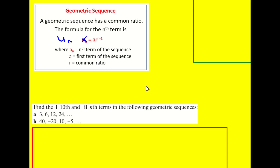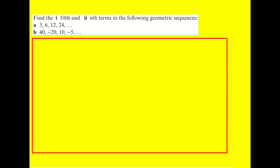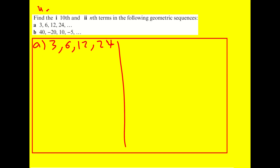My recommendation is to try these yourself first, then check your answers. First question: find the 10th and the nth term of the following sequence. I'd be tempted to work out the nth term first using u_n = a · r^(n−1). So a is 3, r is 2 (we're multiplying by 2 every time), and u_n = 3 × 2^(n−1).